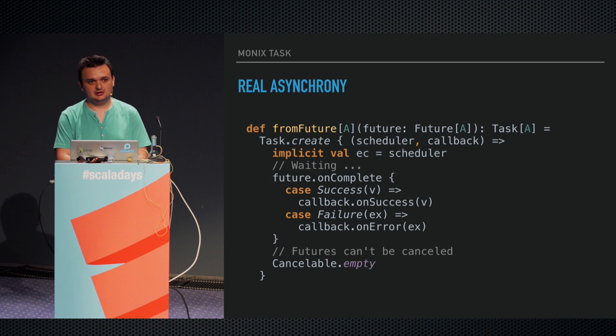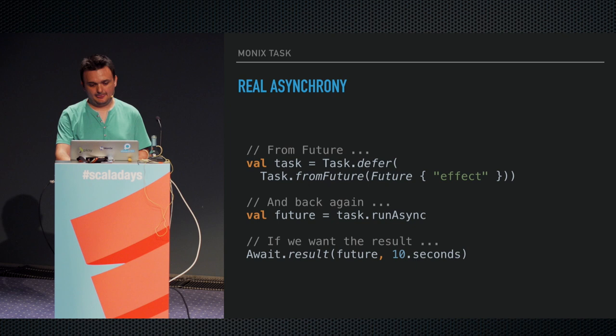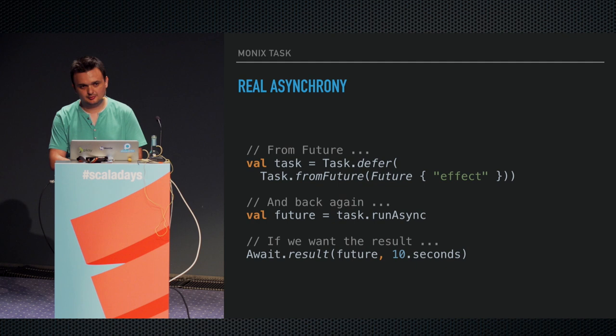Turning a future is similar — you basically use onComplete, and when that runs you call your callback with onSuccess or onError. Futures can't be canceled per their API, so we're not going to pretend we can. The future interoperability is pretty good — you can turn futures into tasks and vice versa.